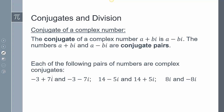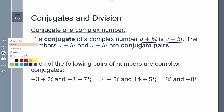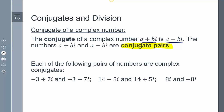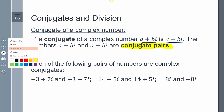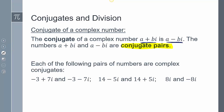The conjugate of a complex number a plus bi is a minus bi. Together, these are called conjugate pairs. For example, negative 3 plus 7i and negative 3 minus 7i are conjugate pairs — the only thing that changes is the sign in front of the imaginary part, the bi portion.